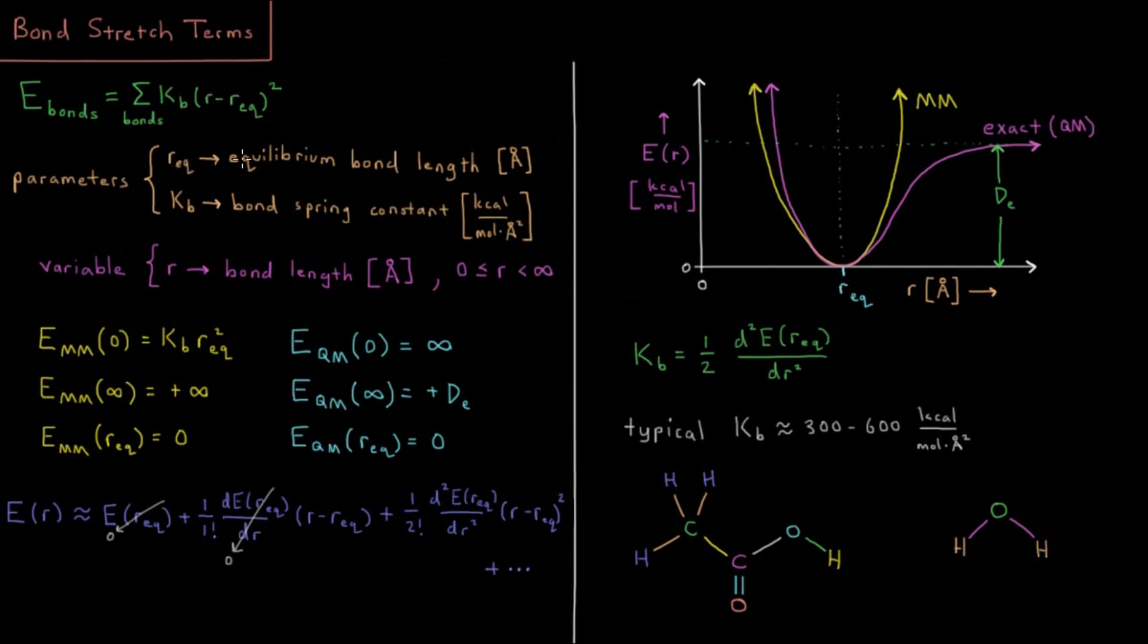Minus REQ, the equilibrium bond length, both of these being parameters, then that quantity squared. So we have a spring constant times bond length minus equilibrium bond length, quantity squared, summed over all of the bonds in our system.